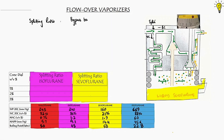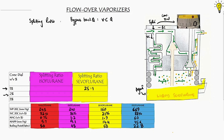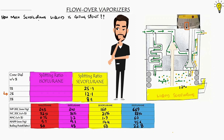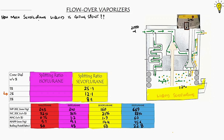The splitting ratio is the ratio of bypass flow to vaporizer chamber flow, directed by the concentration dial settings. Since it is agent-specific, the diversion ratio differs for different gases. For sevoflurane specifically, at 1% setting, the main flow is split into 25 parts bypass track to 1 part vaporizing chamber. At 2%, more flow is directed to the vaporizer chamber — 12 parts to 1 part. At 3%, the splitting ratio becomes 8:1.